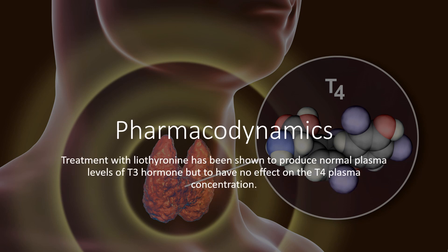In hormonal replacement, liothyronine is more potent and presents a faster action when compared to levothyroxine, but the time of action is significantly shorter. The type of treatment needs to be well evaluated, as fast correction of thyroid hormones in certain diseases presents additional risks such as heart failure. The onset of activity is observed a few hours after administration and the maximum effect is observed after 2–3 days. Treatment with liothyronine produces normal plasma levels of T3 hormone but has no effect on T4 plasma concentration.